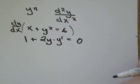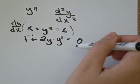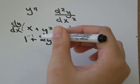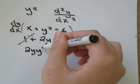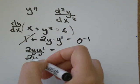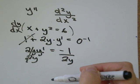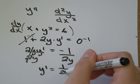So then all you have to do is get y' by itself. So let's move our 1 to the other side. So we'll subtract 1 from both sides. So those will cancel out. And we'll get 2y·y' = -1. Divide both sides by 2y. And you'll get y' = -1/(2y).